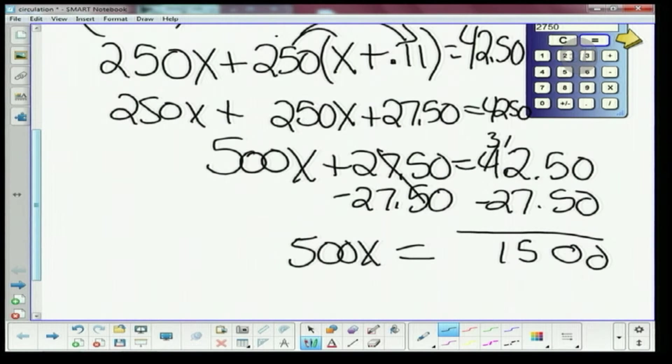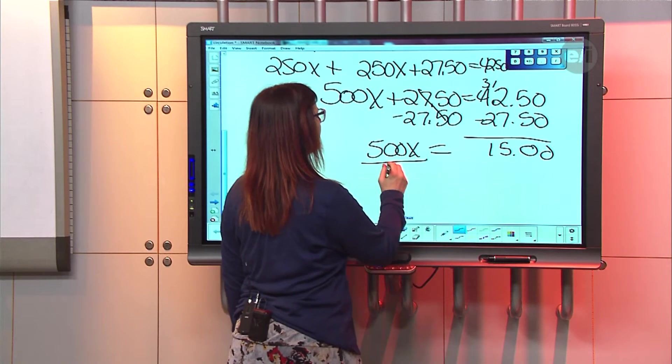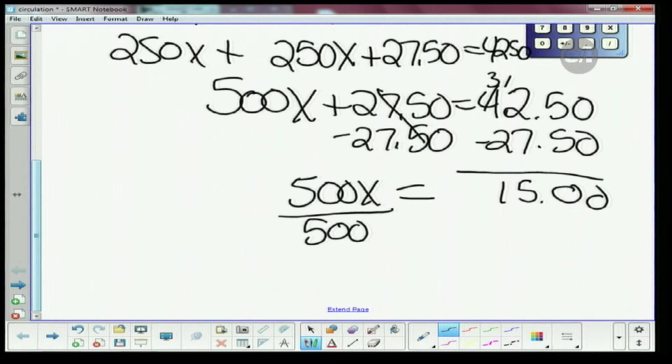So we get $15. 500X equals 15. The last step that we need to do is we're gonna divide both sides by 500. And so we get X is equal to - and I know 15 divided by 500. If I would have put it in the calculator, but I've got a nice calculator - mine is 0.03.